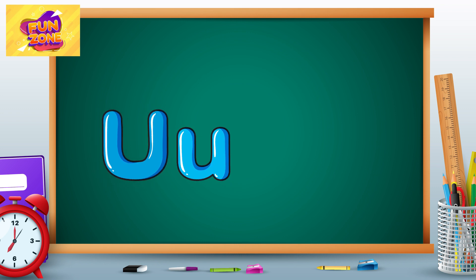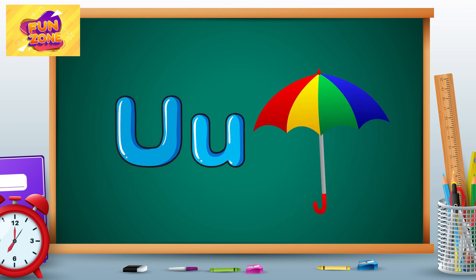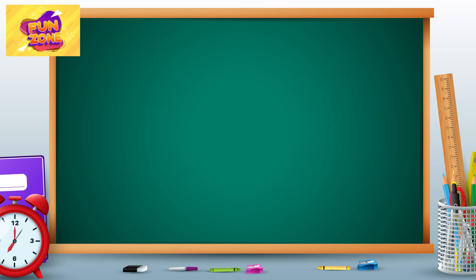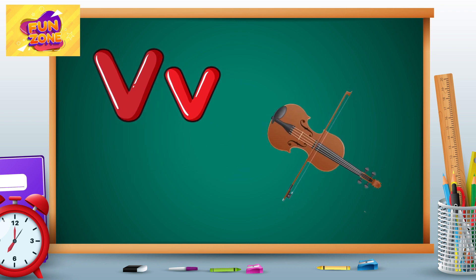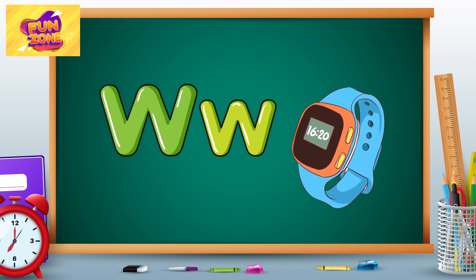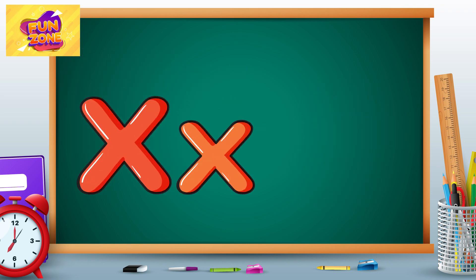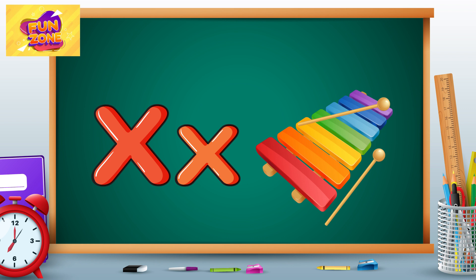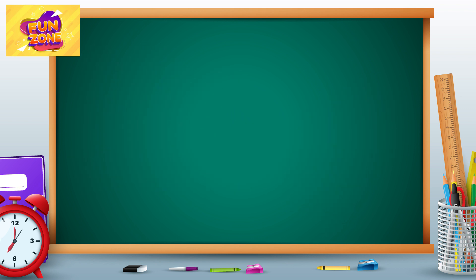U is for umbrella, u-u-umbrella. V is for violin, v-v-violin. W is for watch, w-w-watch. X is for xylophone, x-x-xylophone.